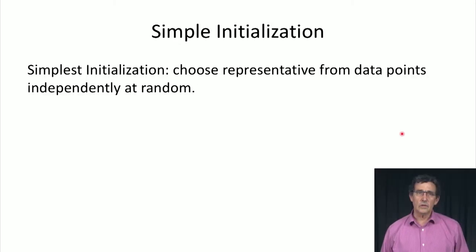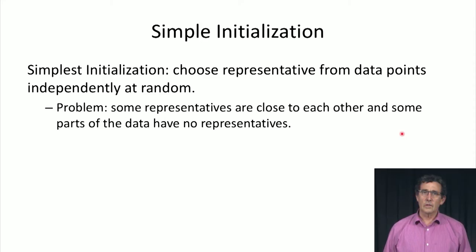So the simple initialization is you basically just choose k points of the data points independently at random with a uniform distribution. The problem in this case is that some representatives might be close to each other and parts of the data might have no representative. Especially we will get representatives close to each other if there is some small region of the space that has a very high probability and a very large number of points.